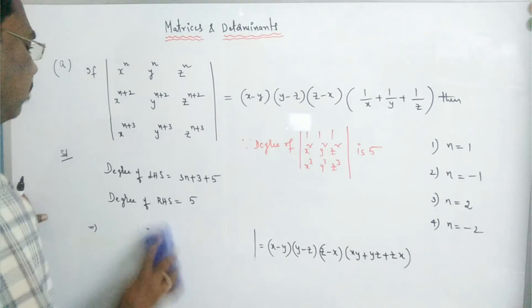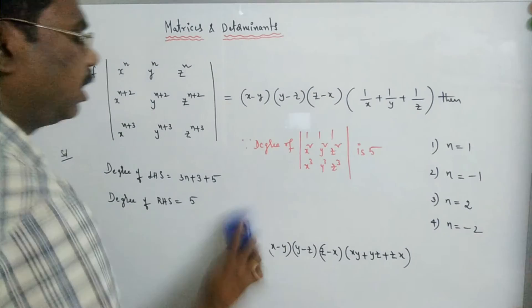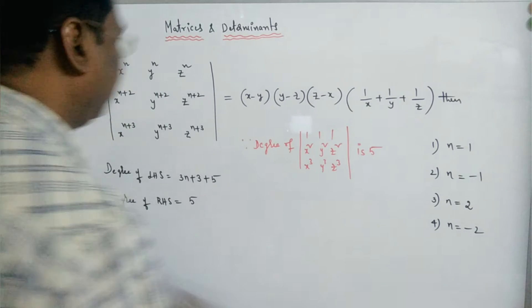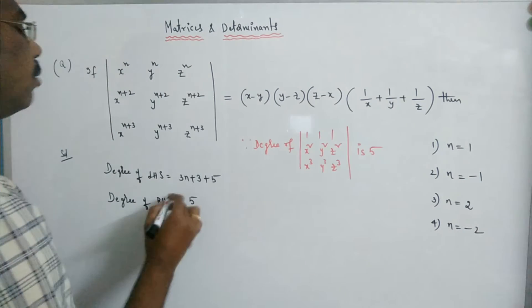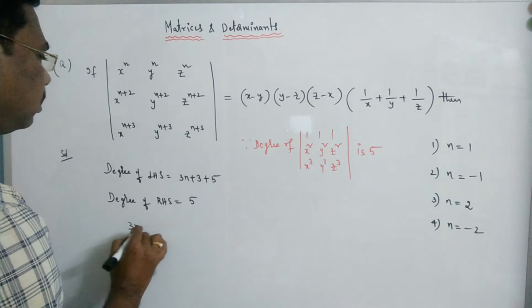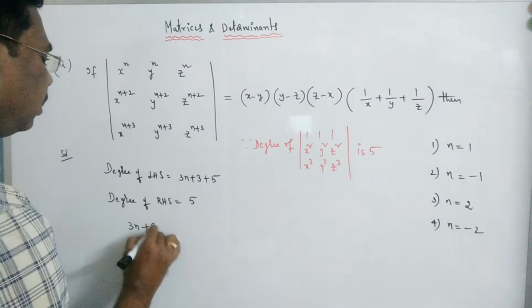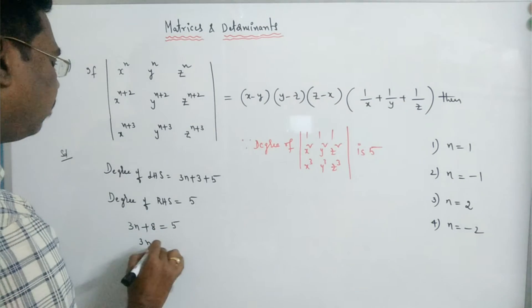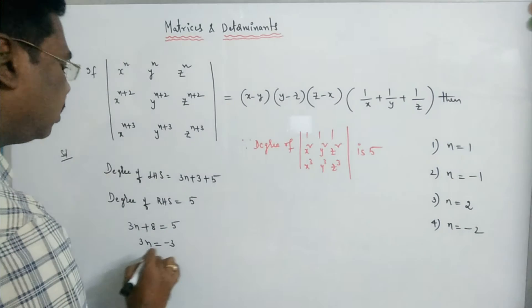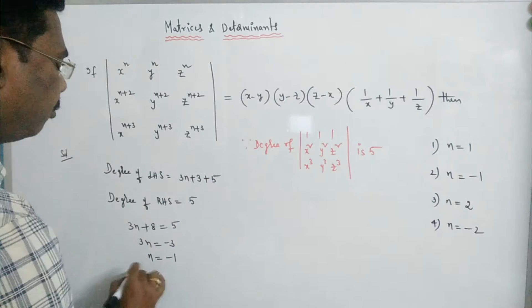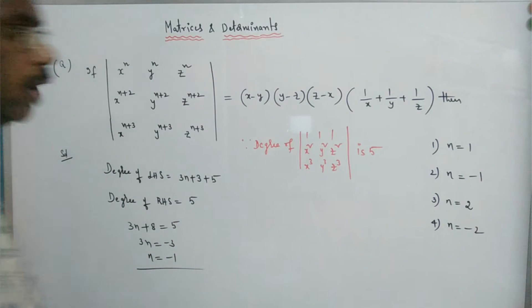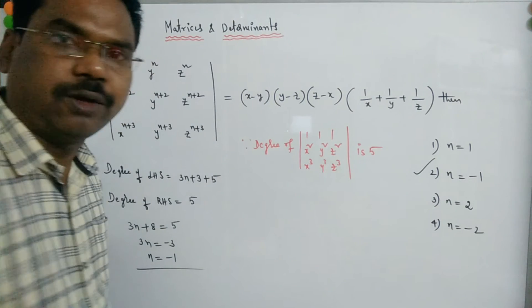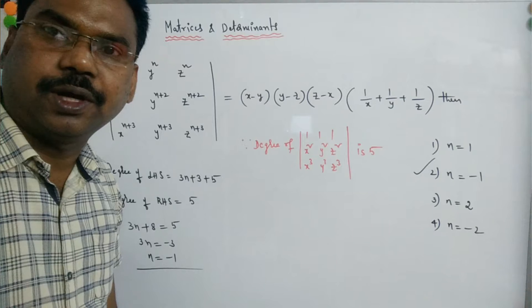Degree of LHS equals degree of RHS. So 3n + 8 = 5, therefore 3n = −3, so n = −1. Therefore n equals −1, and option 2 is the correct one.